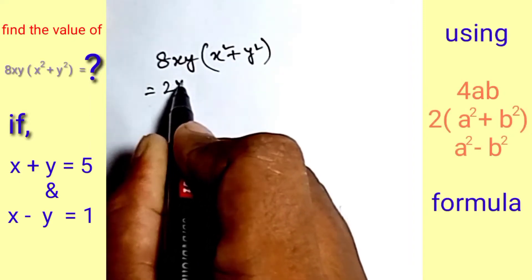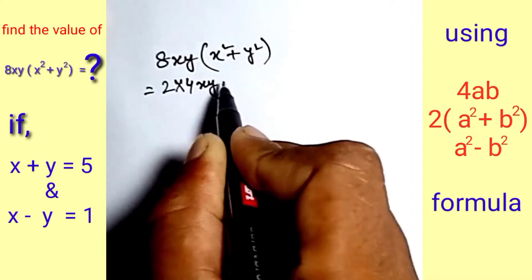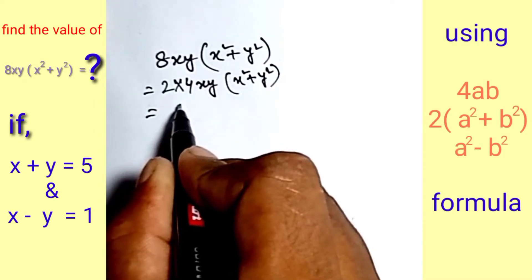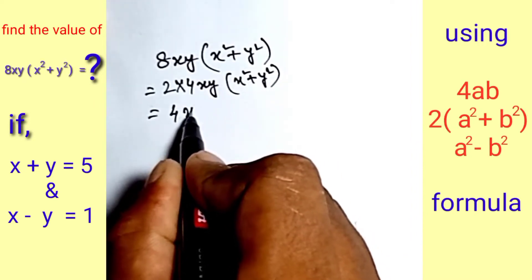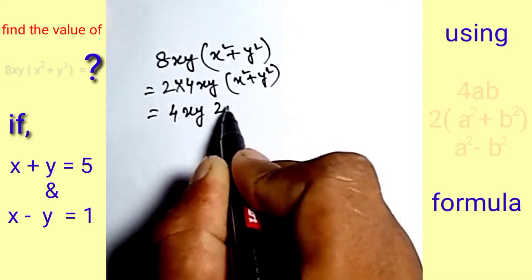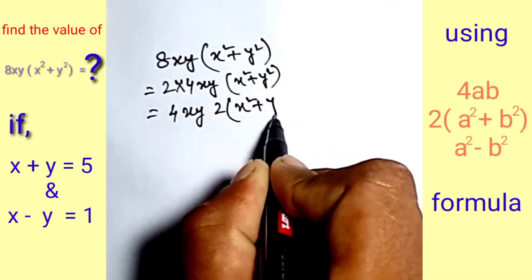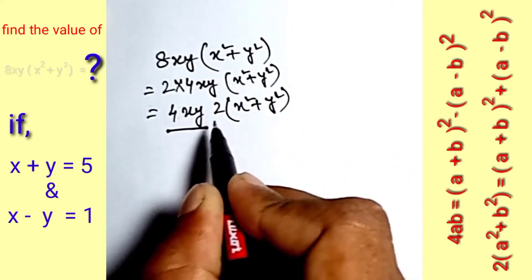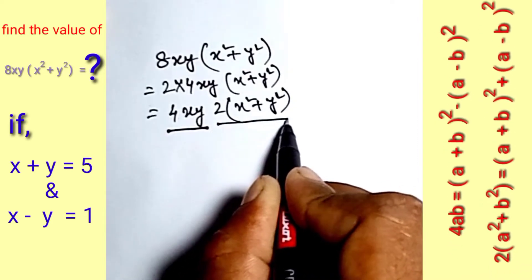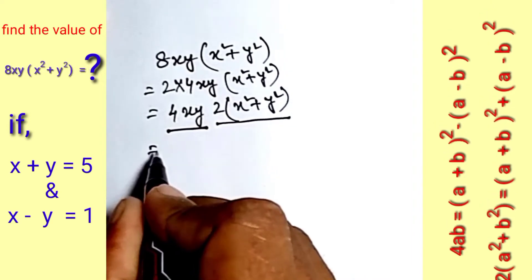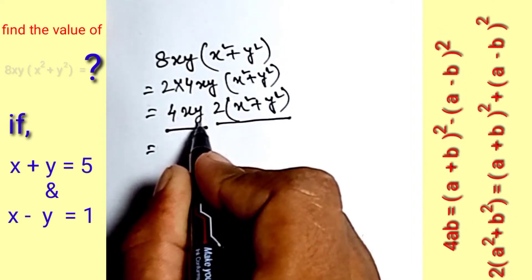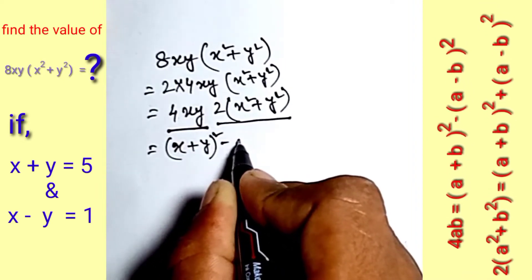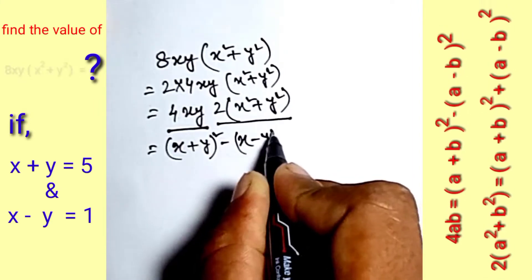We can write 2 into 4xy as a² + y². Now we can write 4xy as 2a² + b² formula. This is the 4ab formula and this is the 2a² + b² formula. The 4xy formula is: x plus y squared minus x minus y squared.